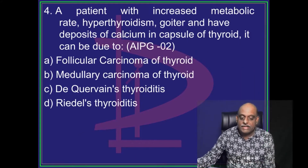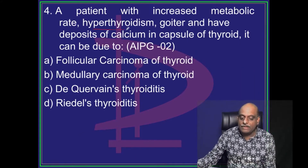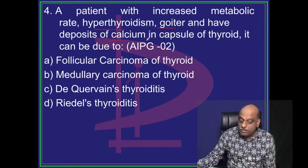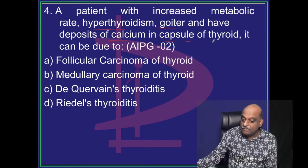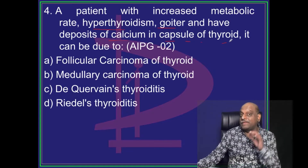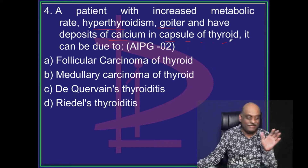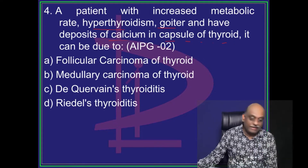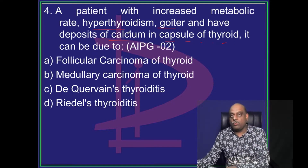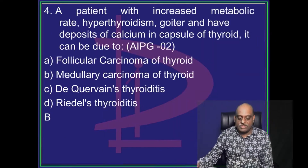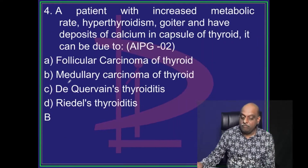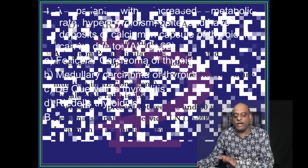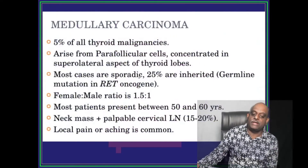A patient is having hyperthyroidism, goiter, and deposits of calcium in the capsule of the thyroid — one of the classical descriptions. So what do you consider? Medullary carcinoma of thyroid is the one which you need to consider.